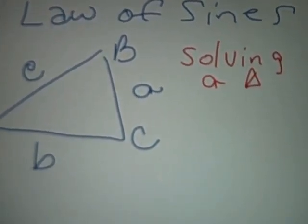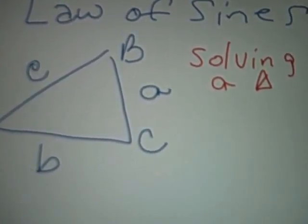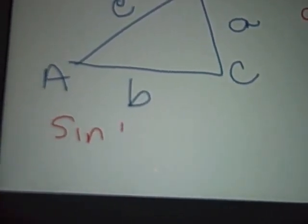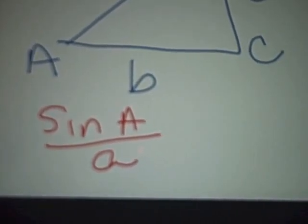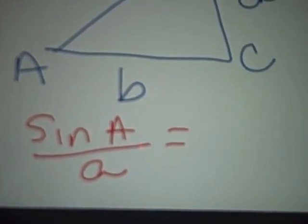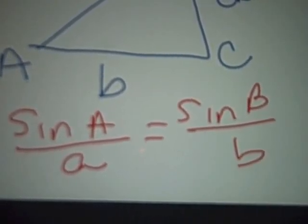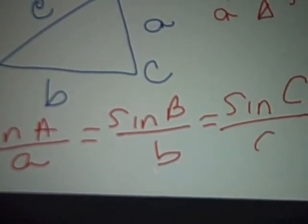The Law of Sines says that if you know the angle of one and the side of another, you can set up a proportion that says sine of A over side a is equal to sine of B over side b. That's also equal to sine of C over side c.